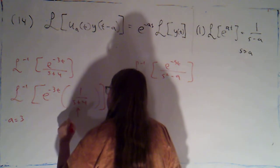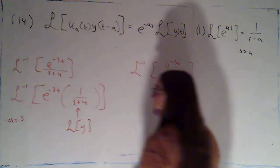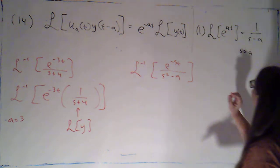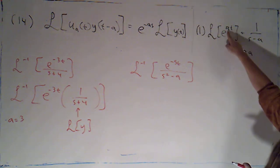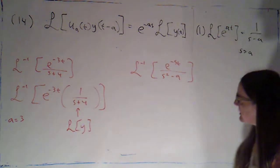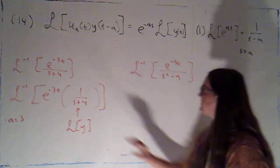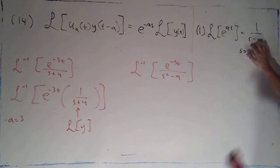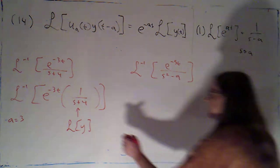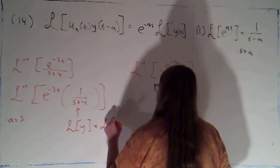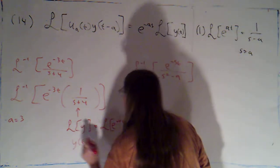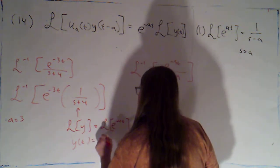That means I want this piece to be the Laplace transform of y, so I want to figure out what my y is. Just be careful — the a in this formula is not the a in that formula. Here I've got 1 over s plus 4, and adding 4 is subtracting negative 4. So this is just the Laplace transform of e to the negative 4t. So my y of t for this part is just e to the negative 4t.